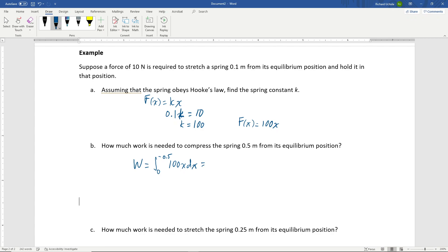Integrating this gives 50x² evaluated from 0 to -0.5. Plugging in -0.5 and squaring gives 12.5 - 0 = 12.5 joules of work required.